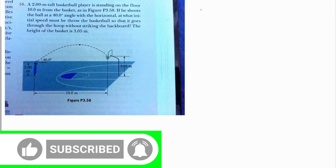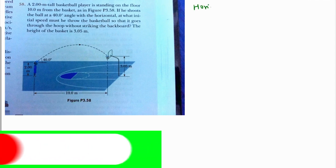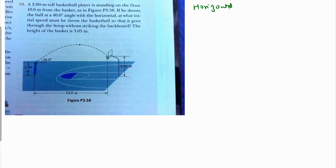Let's analyze the motion in two parts. One is the horizontal motion. In the horizontal, let's first assume that the velocity with which he throws is v naught. So the horizontal component is going to be v naught cos of 40 degrees, and the vertical component is going to be v naught sine of 40 degrees.